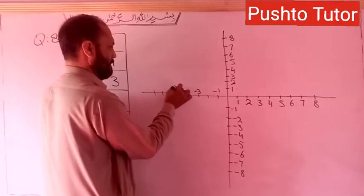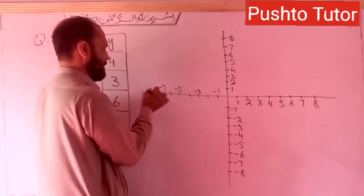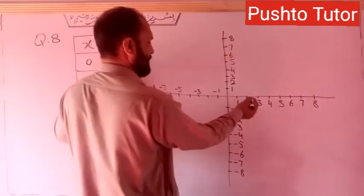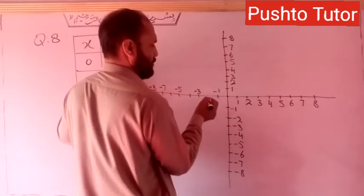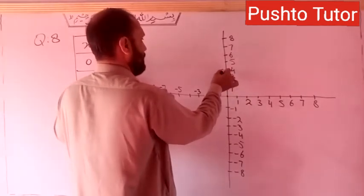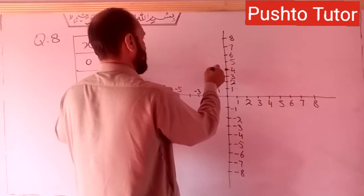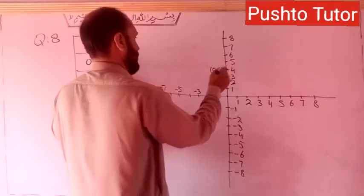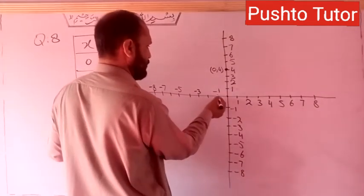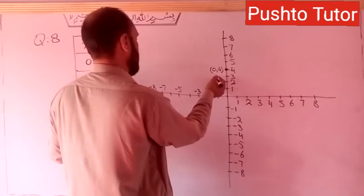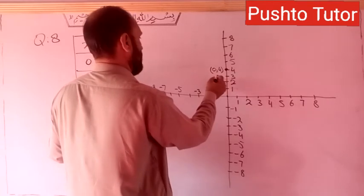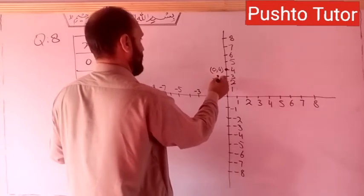On the y-axis we mark up to minus 4, minus 5, minus 6, minus 7. The origin is at (0, 0). The point (0, 4): x is 0 and y is 4. The point (-1, 3): x-axis is minus 1 and y-axis is 3.